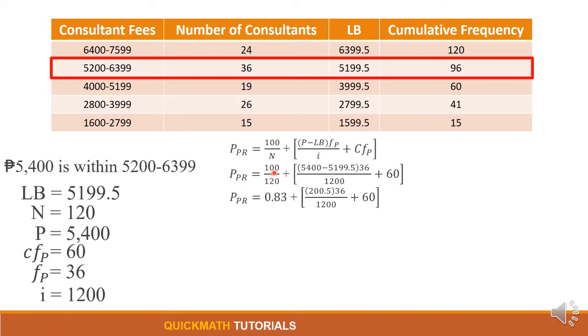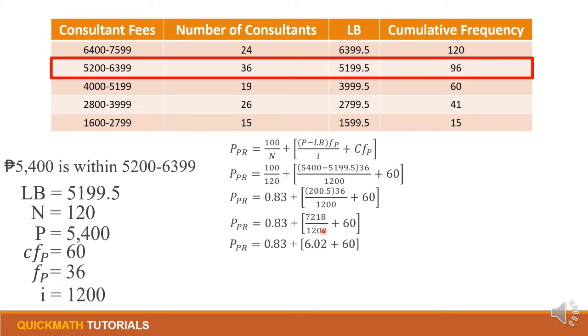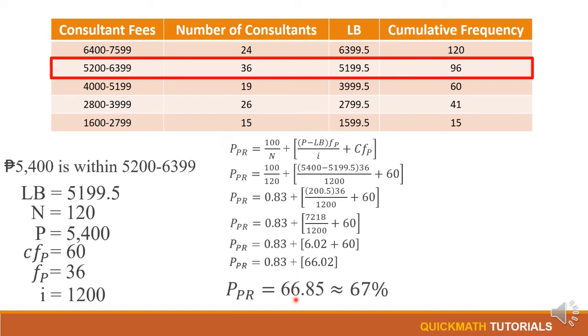Next we divide 100 by 120, so we have 0.83. Plus we subtract 5,400 and 5,199.5, so we are left with 200.5. And our next step is we copy this one, then we will multiply 200.5 times 36, so we have 7,218. And next step is we will divide this, so we are left with 6.02. And next step is we will copy, then add inside the bracket, so we have 6.02 plus 60, so we have 66.02. And adding these two we have 66.85, and to round it off we have 67 percent.